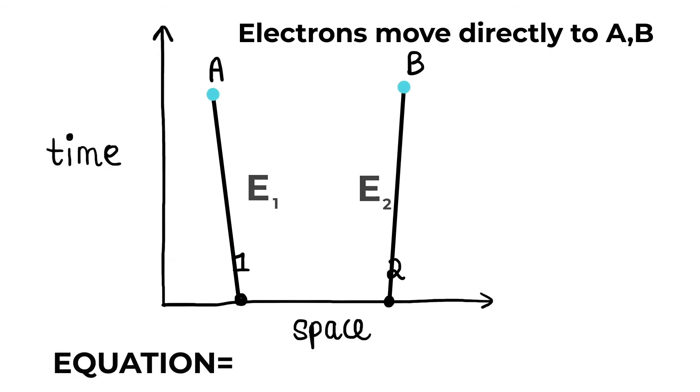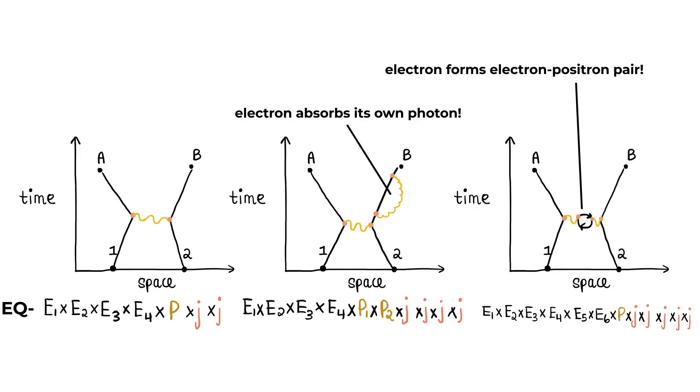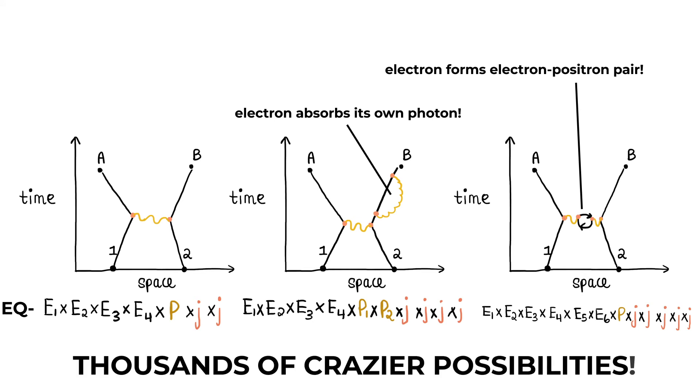The simplest diagram is straightforward with an easy equation. But electrons can also move like this, this or even this. There are thousands of more possibilities.